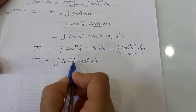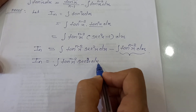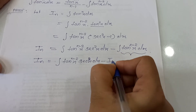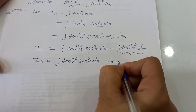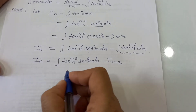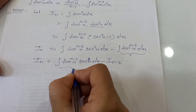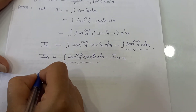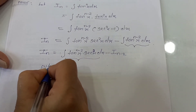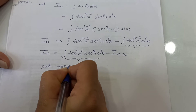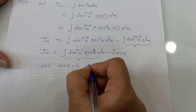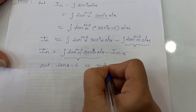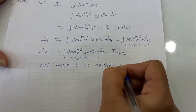So I_n equals the integration of tan raised to n minus 2 times x times sec squared x dx, minus I_{n-2}. To evaluate the remaining integration we will use substitution. We put t equal to tan x, so the derivative gives sec squared x dx equals dt.